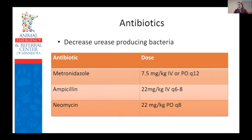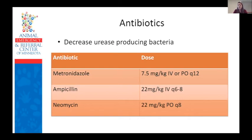Antibiotics decrease urease-producing bacteria, further decreasing bacterial byproduct absorption and bacterial translocation. Options include metronidazole, ampicillin or amoxicillin, and neomycin. Neomycin was traditionally the antibiotic of choice but is now recommended to avoid if there is evidence of intestinal bleeding, ulcerations, or renal failure. The dose of metronidazole is lower than what we would use for other conditions because of the liver's inability to process it effectively. Our medicine and ER team prefers amoxicillin because they've still seen side effects of metronidazole even at these lower doses — both are good options and it's clinician-dependent.